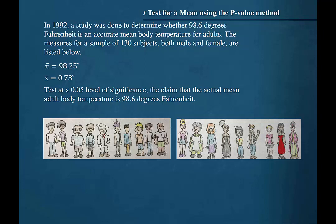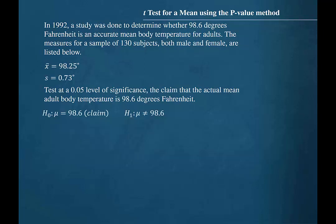In a previous video, we conducted a hypothesis test about whether or not the actual mean body temperature for human adults is 98.6 degrees Fahrenheit. The hypotheses are H₀: μ = 98.6 and H₁: μ ≠ 98.6.